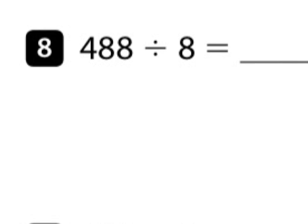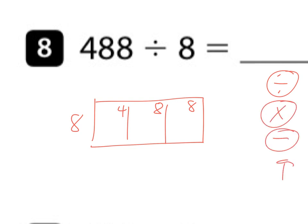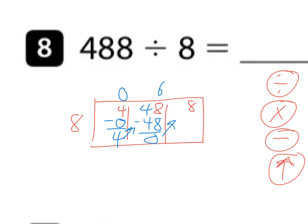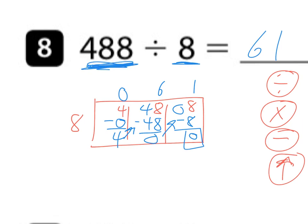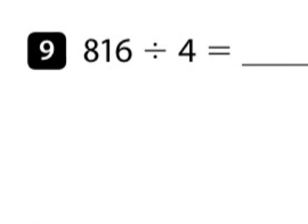Number eight: 488 divided by 8. Three boxes, divisor out here, divide, multiply, subtract, bring up. 8 goes into 4 zero times, 0×8=0, subtract, bring 4 up. 8 goes into 48 six times, 6×8=48, subtract, bring up zero. 8 goes into 8 one time, 1×8=8, subtract — nothing left over. There are 8 groups of 61 to equal 488; 8 divides evenly into 488 sixty-one times.